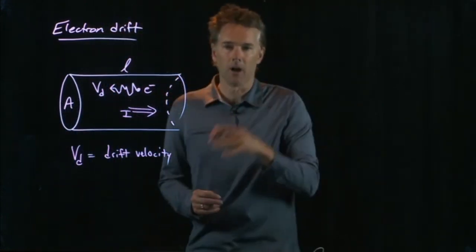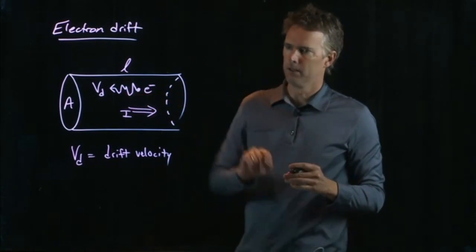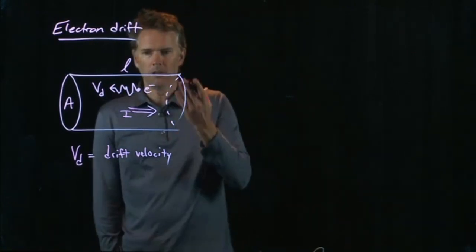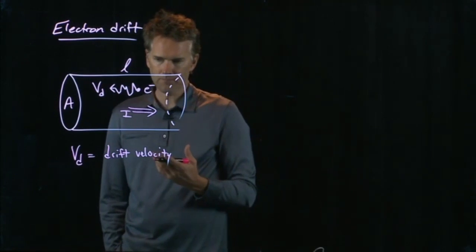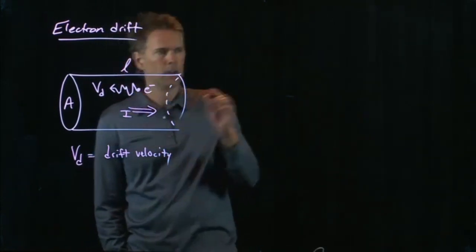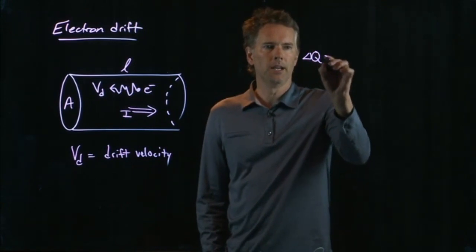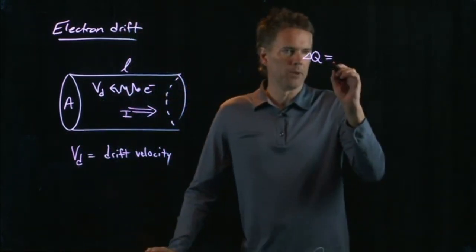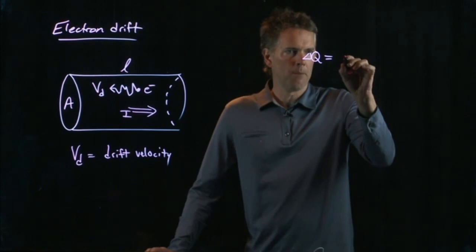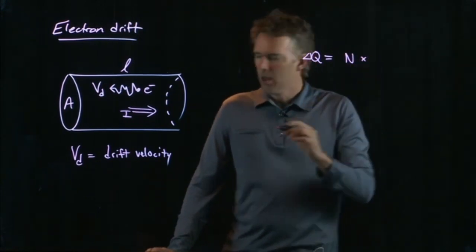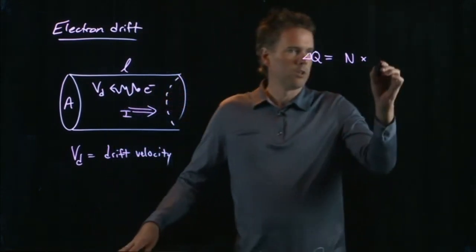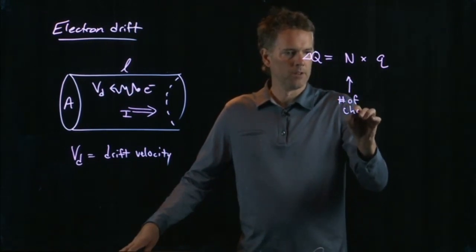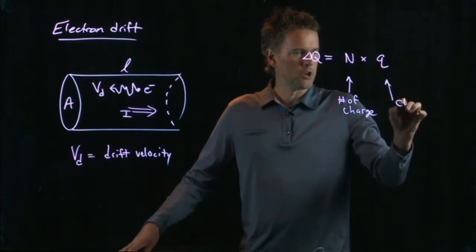They actually bounce up and down a lot and move slowly to the left. As we're going to see, the drift velocity can be rather slow. So how do we calculate this drift velocity? Well, let's go back to the idea of delta Q. Delta Q is the amount of charge that's going to move. And if I think about what that really means, it's the number of charges, N, times the charge of each particle, Q. This is the number of charges, and that's the charge on each one.